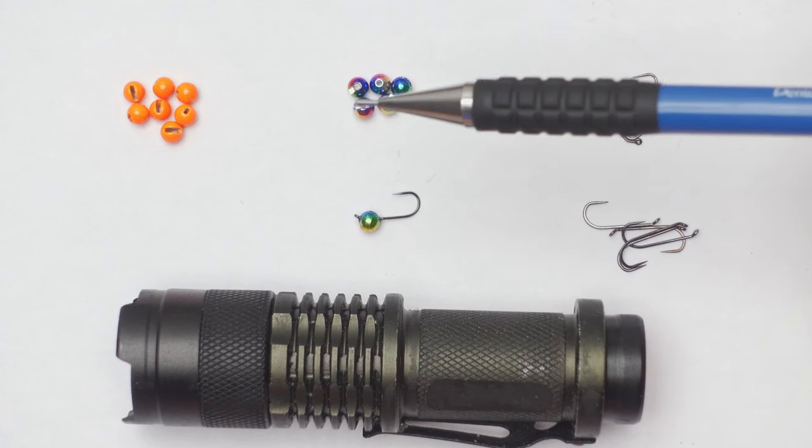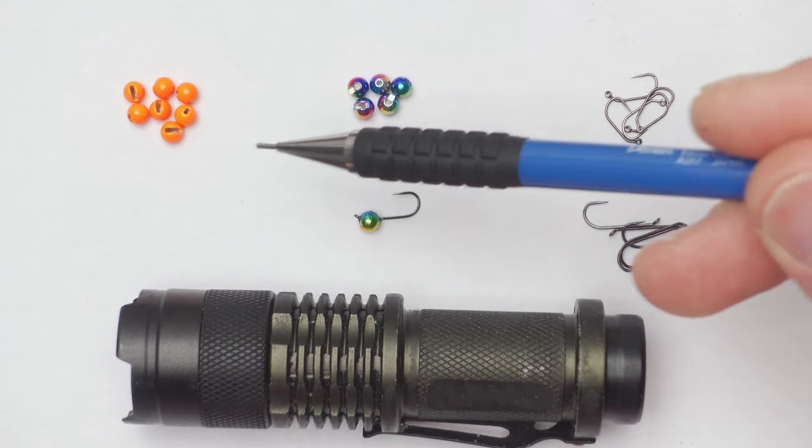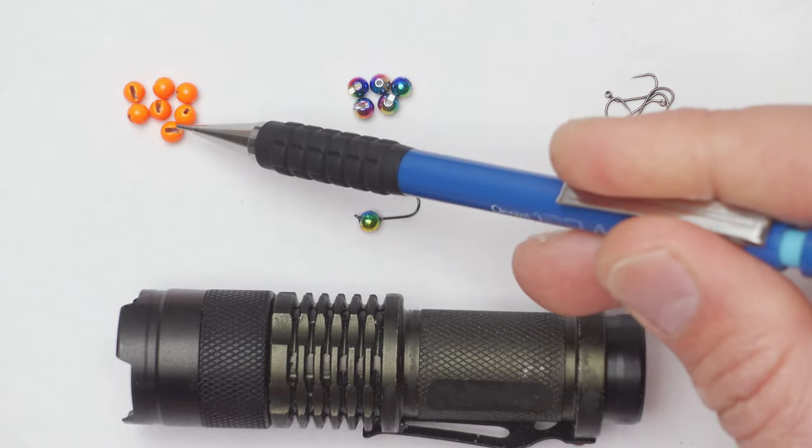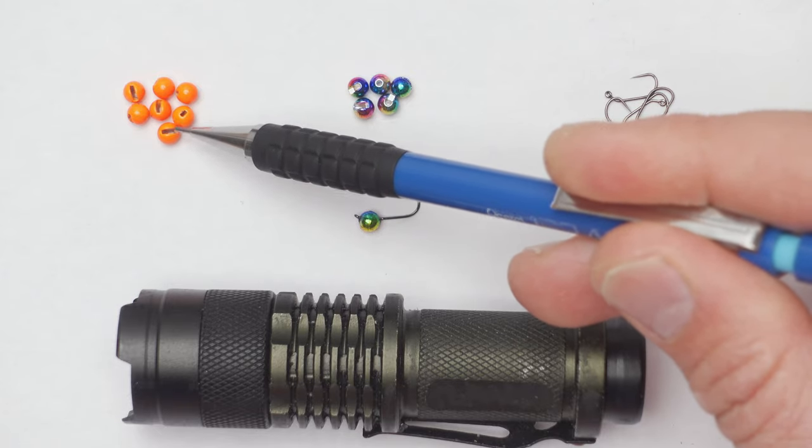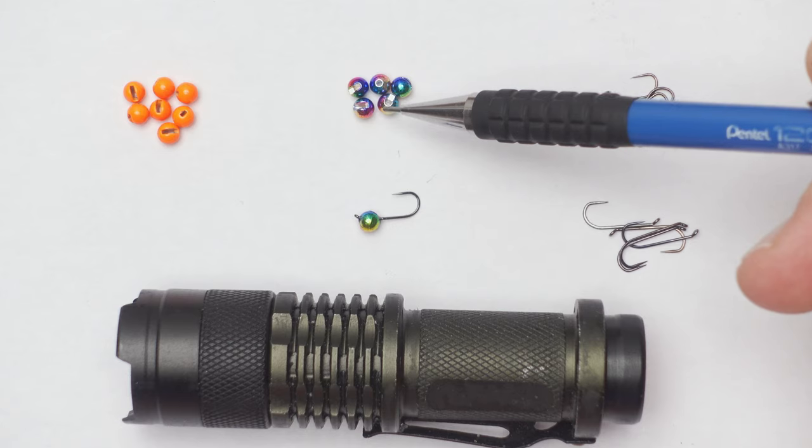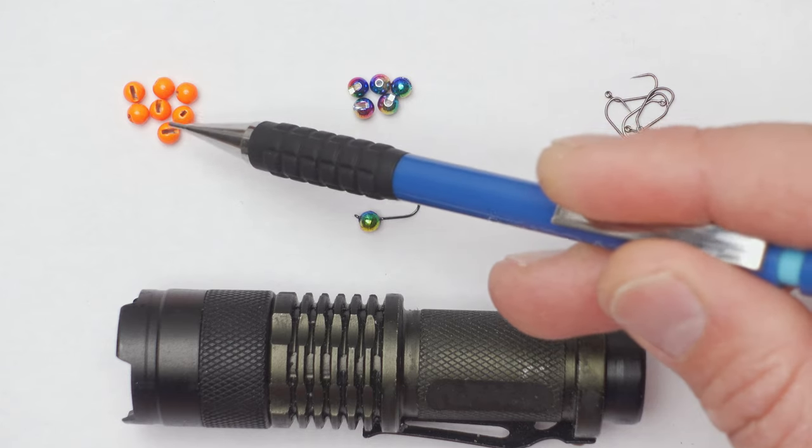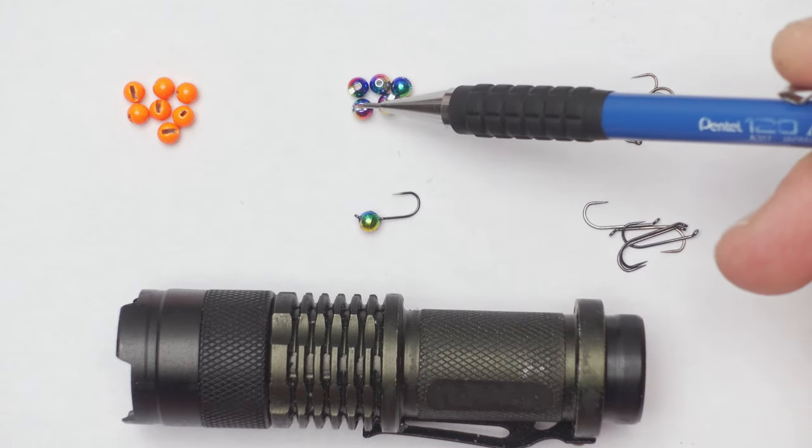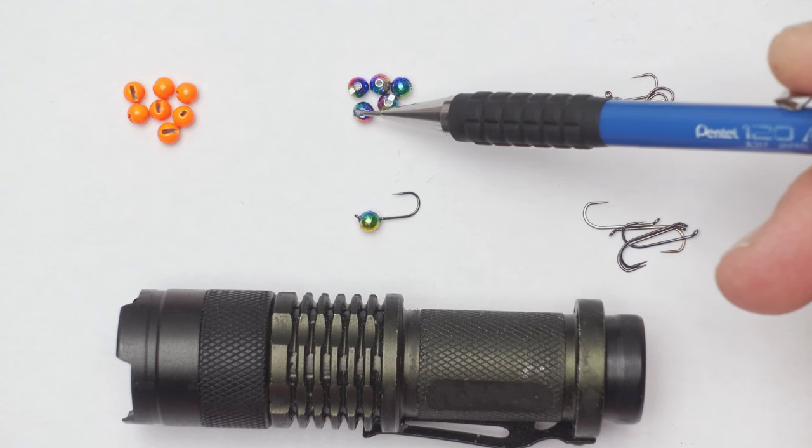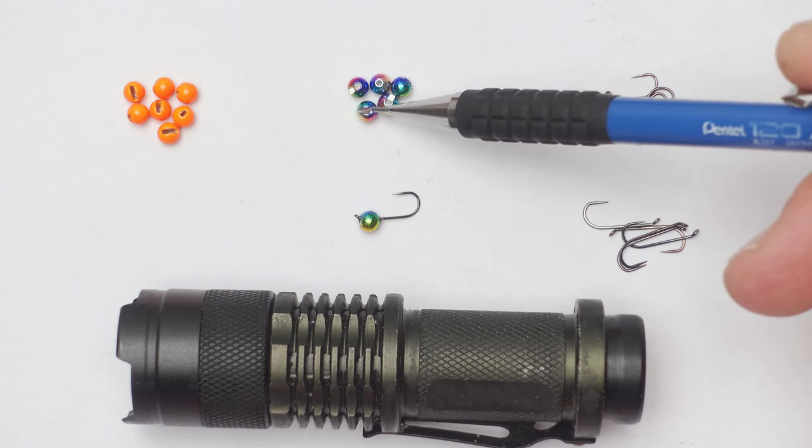For that you will need very affordable and basic components. For example, you will need slotted tungsten beads. You can get them in a variety of sizes and colors. One of my favorite colors is multi-color or rainbow.